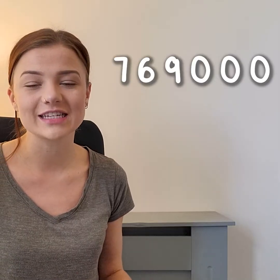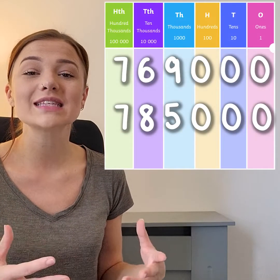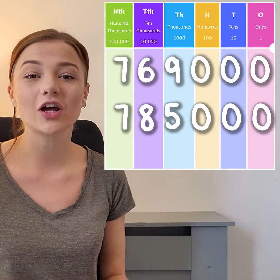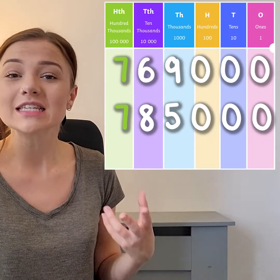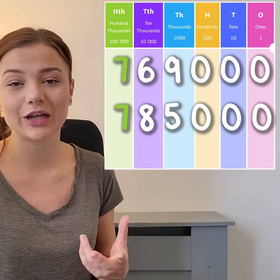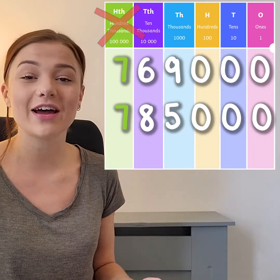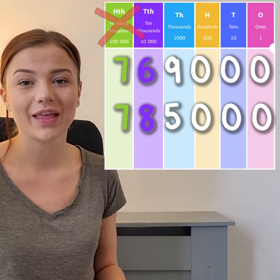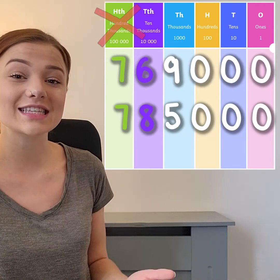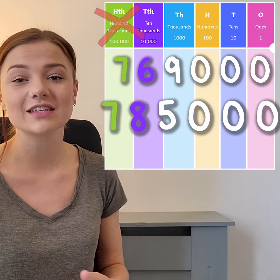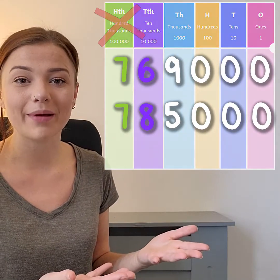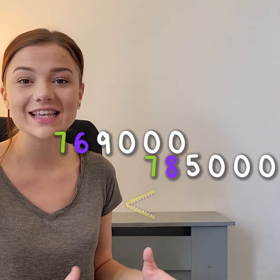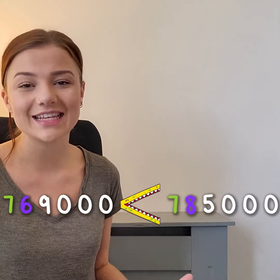Here are the numbers 769,000 and 785,000. If we put these on a place value chart we can see that they both have their highest value digit in the hundred thousands column. Both numbers have the digit 7 in the hundred thousands column, so we can't use that column to compare them. We look to the next highest value column to the right, which is the ten thousands column. In 769,000 there is a six, and in 785,000 there is an eight in the ten thousands column. This means that 785,000 is the larger number, so 769,000 is less than 785,000. We can use the less than symbol to show this.